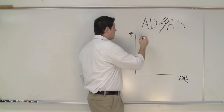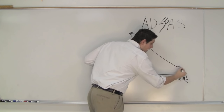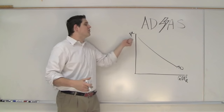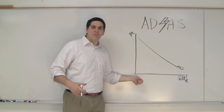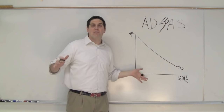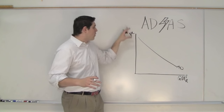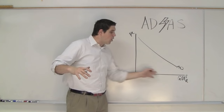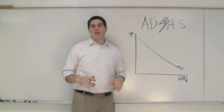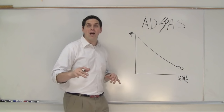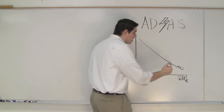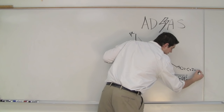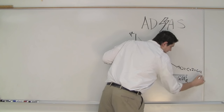First one is aggregate demand. Aggregate demand, just like regular demand, is downward sloping. Why? Because when the price level is high, the quantity demanded in our entire economy is not going to be very high. Price level is the general prices of things — if the price level were lower, more people would want to buy stuff. Aggregate demand is made up of the four components of GDP: C plus I plus G plus XN.